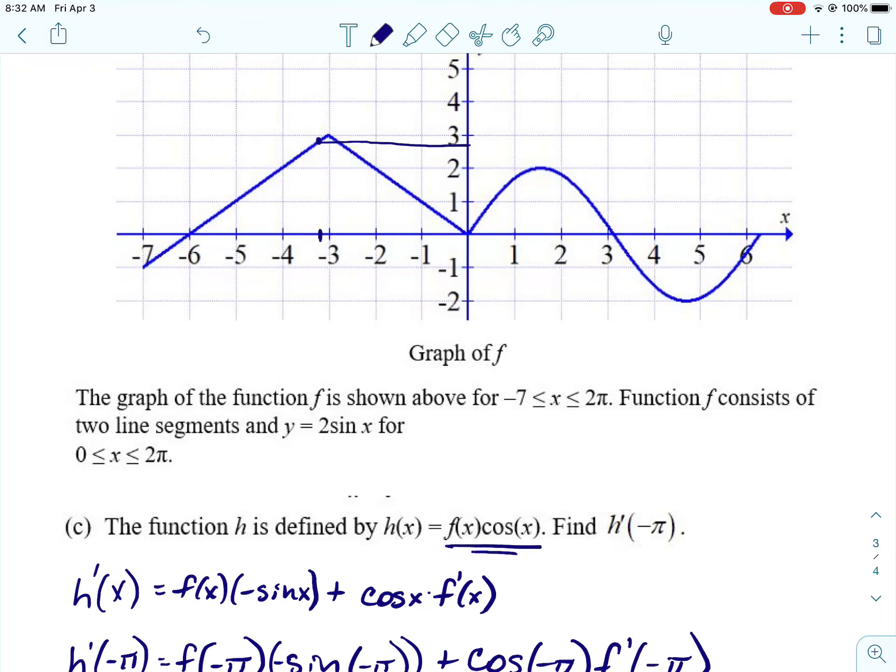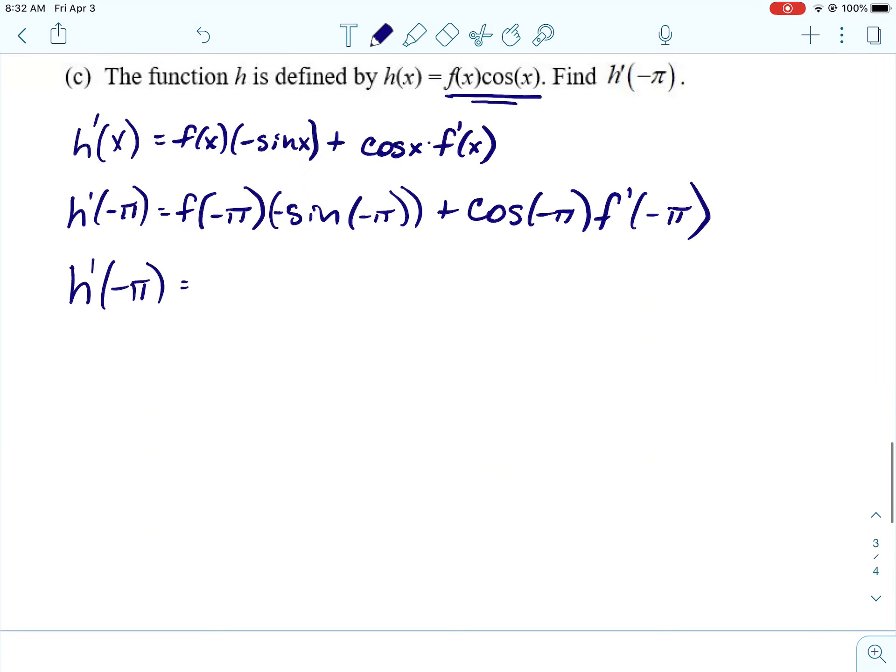So, F of negative π. Alright, we're not going to be able to tell exactly what that is, but in the end it's not going to really matter. The negative π is just a little bit smaller than negative three. So, it's this point right here. So, I'm going to say that's about 2.8-ish. It honestly doesn't matter in a second.